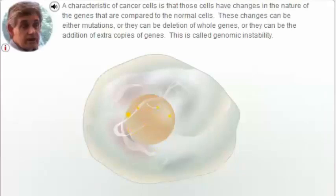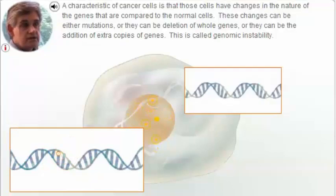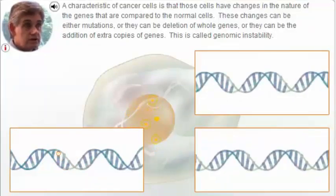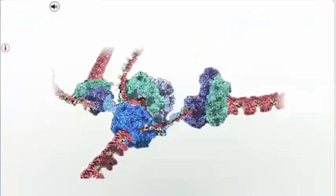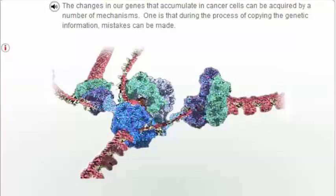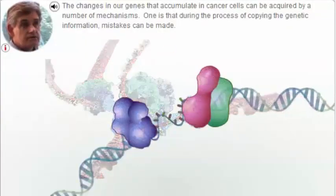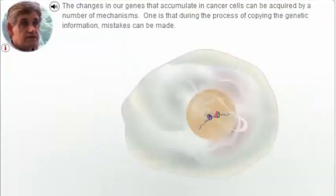A characteristic of cancer cells is that they have changes in the nature of their genes compared to normal cells. These changes can be either mutations, the deletion of whole genes, or the addition of extra copies of genes. This is called genomic instability. The changes in our genes that accumulate in cancer cells can be acquired by a number of mechanisms — one is that during the process of copying the genetic information, mistakes can be made.